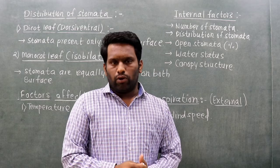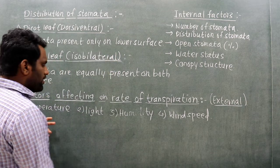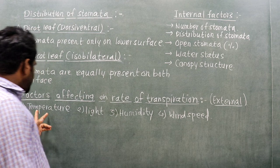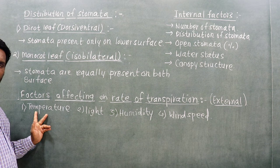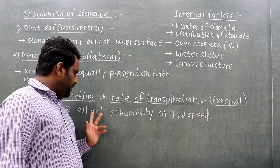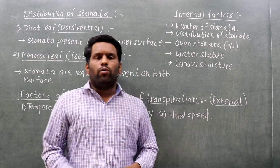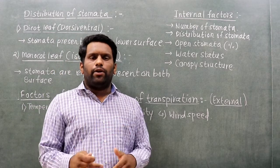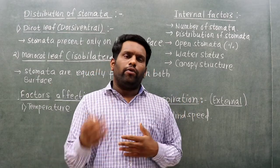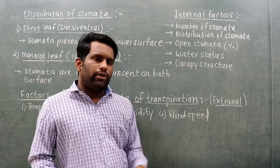Water lost through the leaf is called transpiration. The external factors affecting the rate of transpiration include: temperature, light, humidity, and wind speed. Higher light intensity increases transpiration. Low humidity increases the rate of transpiration. When wind speed is faster, the rate of transpiration also increases.